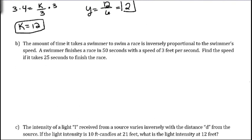Okay, now our next example. The amount of time it takes a swimmer to swim a race is inversely proportional to the swimmer's speed. A swimmer finishes a race in 50 seconds with a speed of 3 feet per second. Find the speed if it takes 25 seconds to finish the race. So there's a lot of stuff going on here, but just take it one piece at a time. So we're going to look at the first sentence.